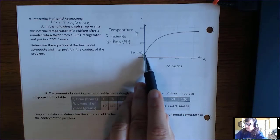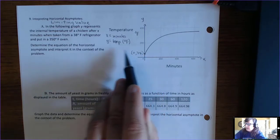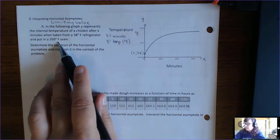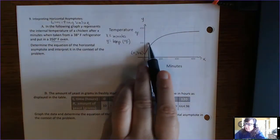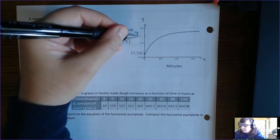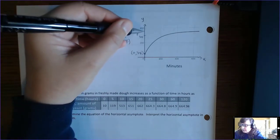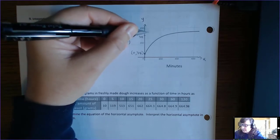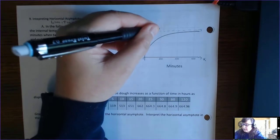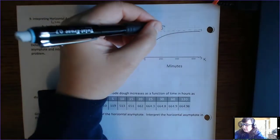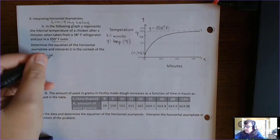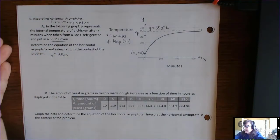Everything reaches the temperature of its environment given enough time. The chicken is taken from a 38°F refrigerator and put into a 350-degree oven. Looking at the graph, it seems to level off: halfway between 200 and 400 is 300, and halfway between 300 and 400 is 350. The graph levels off right there, so there is a horizontal asymptote at y = 350 degrees Fahrenheit.